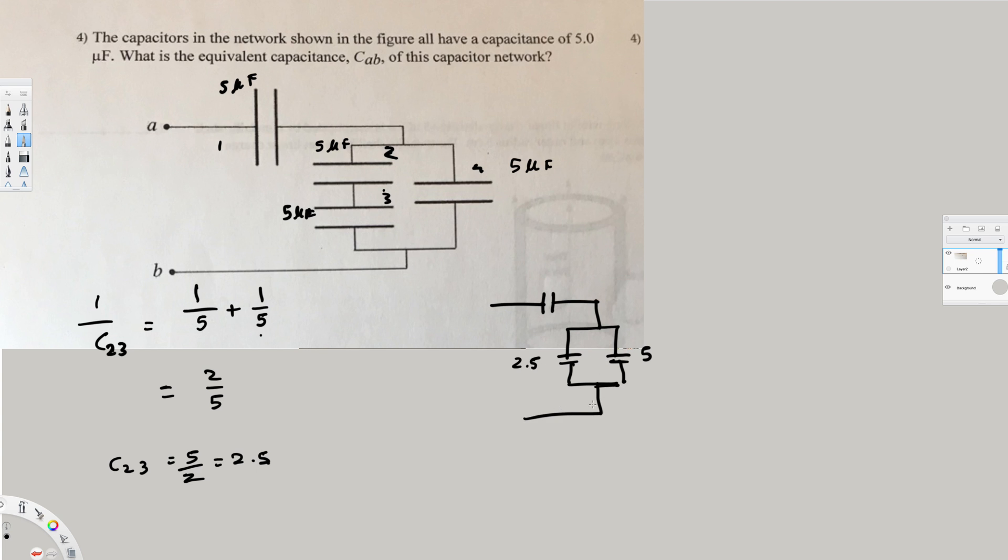When they are in parallel, we just add them together. So this is going to be C234, equal to 2.5 plus 5, which gives us 7.5 microfarads.